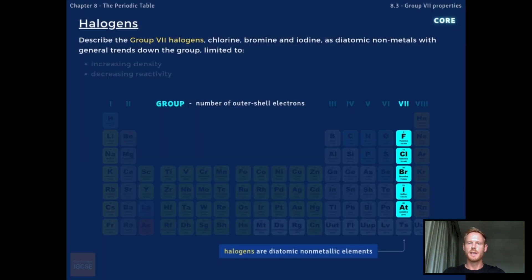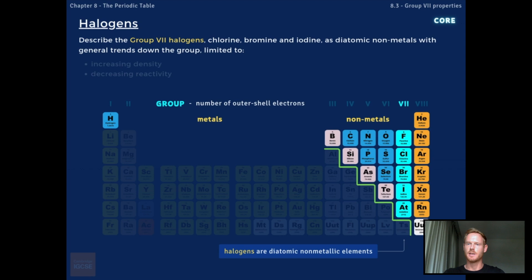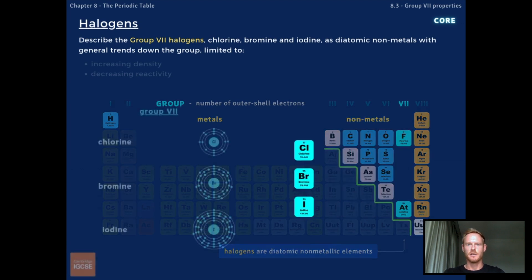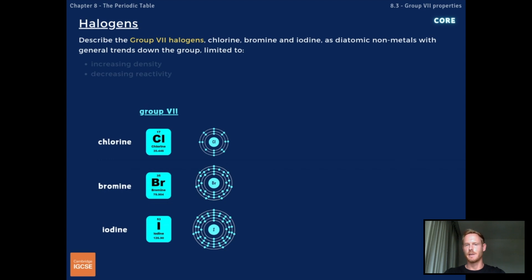The elements in Group 7 of the periodic table are referred to as halogens. The halogens are non-metals, which we know because of their position in the table. See topic 8.1 for more details. The second, third and fourth elements in Group 7 are chlorine, bromine and iodine. All halogens have seven outer shell electrons, meaning they gain one electron to form negative halide ions with a one minus charge.